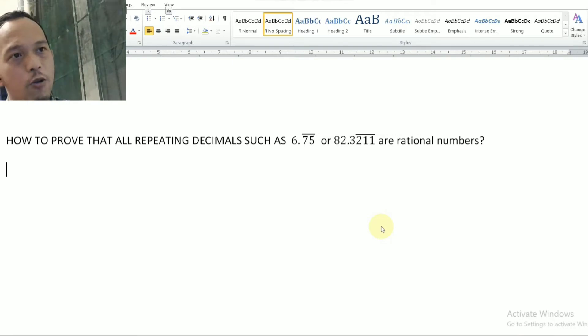To prove that all repeating decimals are rational numbers is by showing that all repeating decimals can be expressed into the ratio of two integers. So that is what we are going to do.